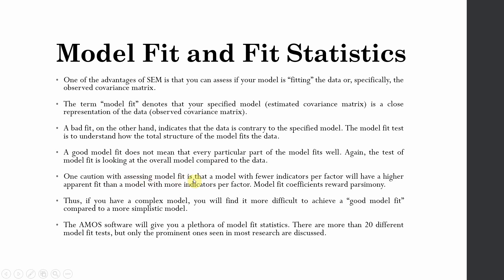One caution with assessing model fit is that the model with fewer indicators per factor will have a higher apparent fit than a model with more indicators per factor. If you've got more indicators, then you might have problems with your model fit. Model fit coefficients reward parsimony. This is one of the hallmarks of scientific research. Thus, if you have a complex model, you will find it more difficult to achieve a good model fit compared to a simplistic model.